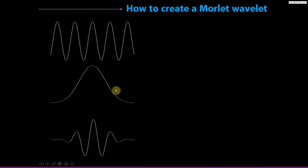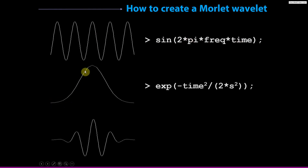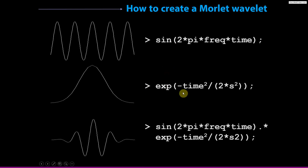We know the math for a sine wave and its MATLAB implementation: sine of 2π·f·t. We know the MATLAB implementation of a Gaussian: e to the minus t-squared over 2s-squared. So now to make a Morley wavelet it's very simple — we just pointwise multiply these two functions together.